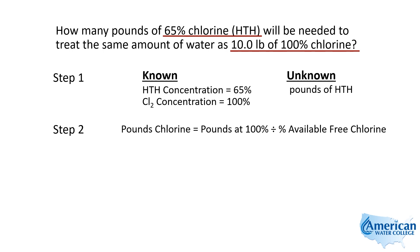The formula you can use to solve this is: pounds of chlorine equals pounds at 100% divided by the percent available free chlorine. So you basically take the total pounds given and divide it by the percent available, and that will give you your answer.